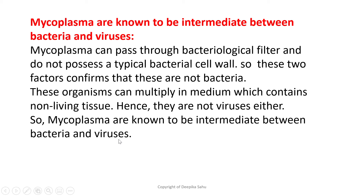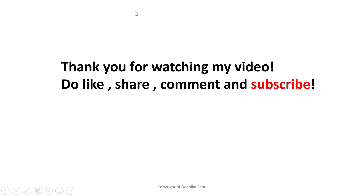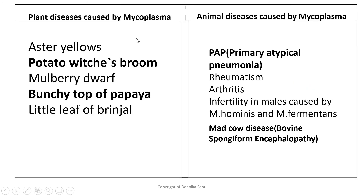Plant diseases caused by mycoplasma include aster yellows, potato witch broom disease, mulberry dwarf, bunchy top of papaya, and little leaf of brinjal. Potato witch broom disease and bunchy top of banana are very important from an examination point of view.